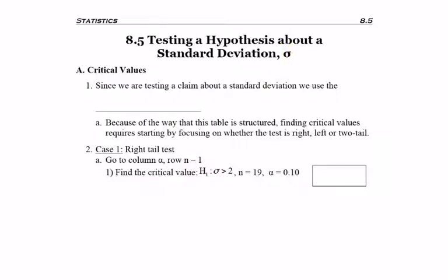First, let's talk about critical values. Since we're testing a claim about a standard deviation, we will be using the chi-squared table. Because of the way that this table is structured, finding critical values requires focusing on whether the test is a right, left, or two-tailed test.